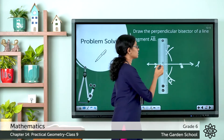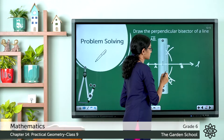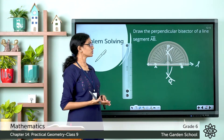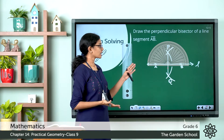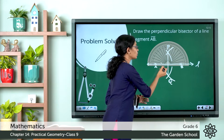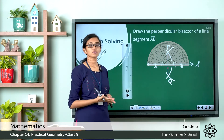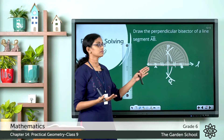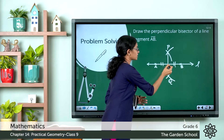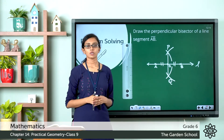Now let us join the points P and Q using the ruler or straight edge. Align your ruler properly then join the points. Now we have joined the points P and Q. You can see it is perpendicular to the line segment AB and it divides the line segment AB into two equal parts. Such a perpendicular line is called the perpendicular bisector of the line segment. Let this point be O — the length of AO and the length of OB will be equal.